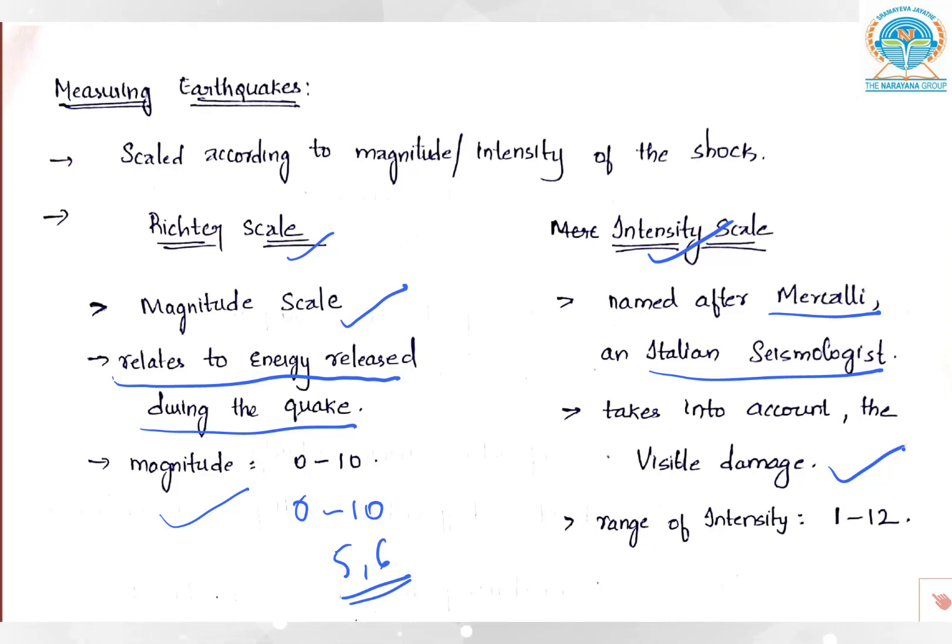From that, the intensity is calculated and given in the range of 1 to 12. Remember, Richter scale is 0 to 10, and intensity scale is 1 to 12.